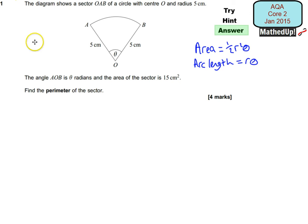I'm now going to go through the full solution to this. We know that the area of the sector is 15 centimeters squared, so I'm going to replace the area here with 15. We also know that the radius is 5, so I'm going to replace the radius here with 5. So the area, which is 15, equals half r squared, so half of r squared which is 25, times theta.